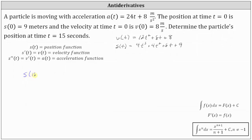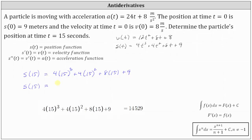s(15) = 4 times (15)³ plus 4 times (15)² plus 8 times 15 plus 9. The particle's position at 15 seconds is 14,529 meters.